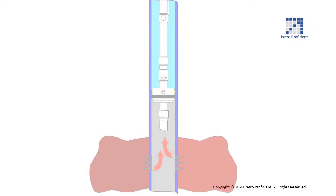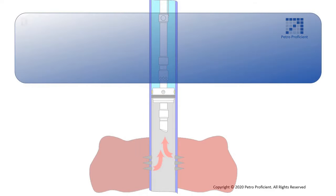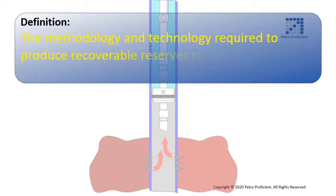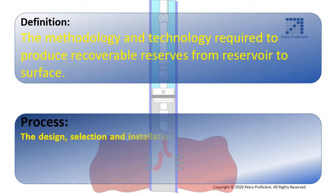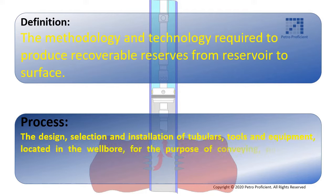How do we define completions? Well completions is the methodology and technology required to produce recoverable reserves from reservoir to surface. The well completions process involves the design, selection and installation of tubulars, tools and equipment located in the well bore, for the purpose of conveying, pumping or controlling production fluids.